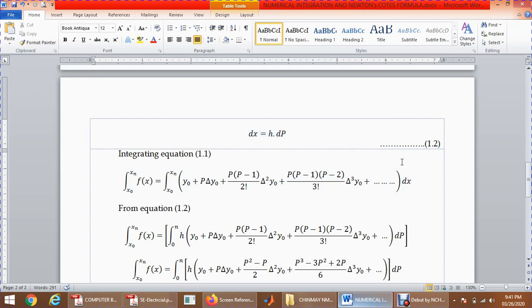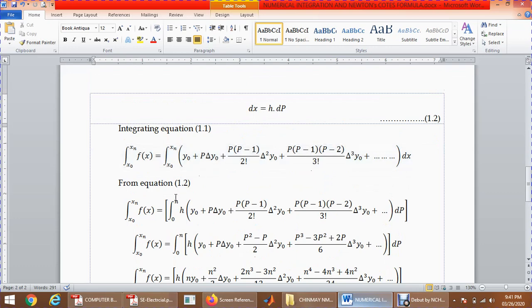Therefore, there will be a change in the equation: ∫f(x) = ∫(0 to n) h[y0 + p∆y0 + p(p-1)/2! ∆²y0 + ...] dp.